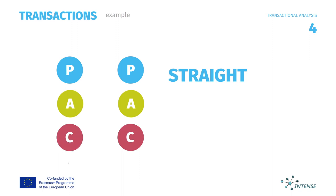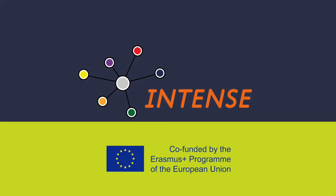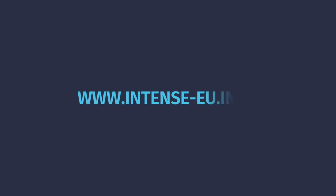We can call a transaction parallel or straight as long as, in our example, two people are engaging with the adult ego state.